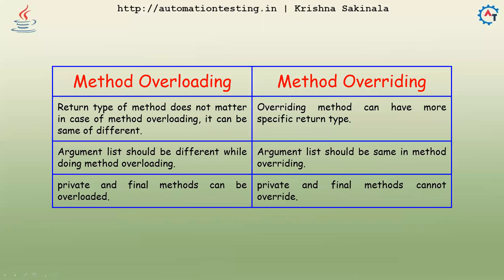The return type of a method does not matter in case of method overloading — it can be the same or different. You just focus on the method name and different parameters. With overriding, the method can have a more specific return type, but everything else should be the same — it should be an exact replica.